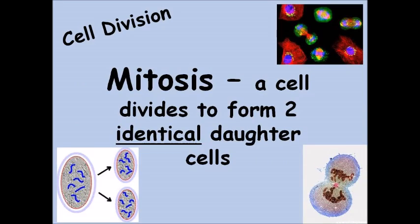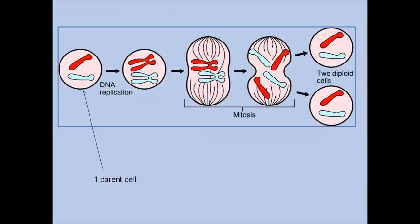Mitosis is when a cell divides to form two identical daughter cells. This is the most common type of cell division — it happens to every cell of our body. Our cells contain 46 chromosomes: 23 from mum and 23 from dad. In this diagram I'm only showing one pair of chromosomes, so one from mum and one from dad — just two chromosomes.